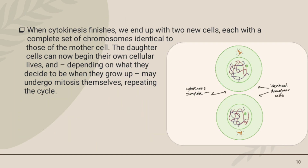When cytokinesis finishes, we end up with two new cells. Each cell has a complete set of chromosomes identical to those of the mother cell. Both cells are identical to the mother cell — essentially full copies.